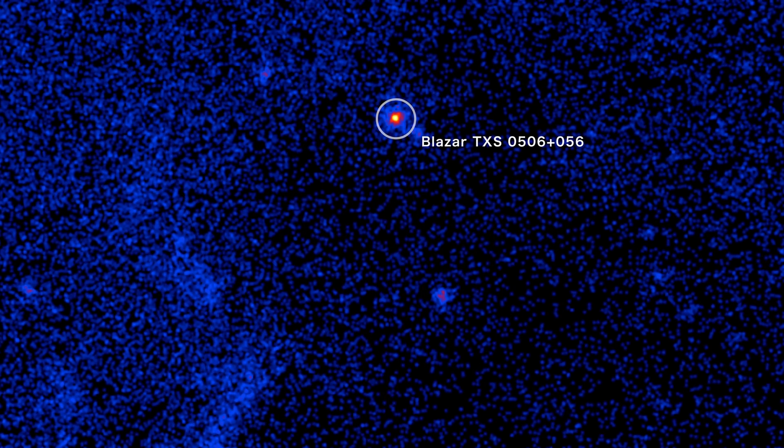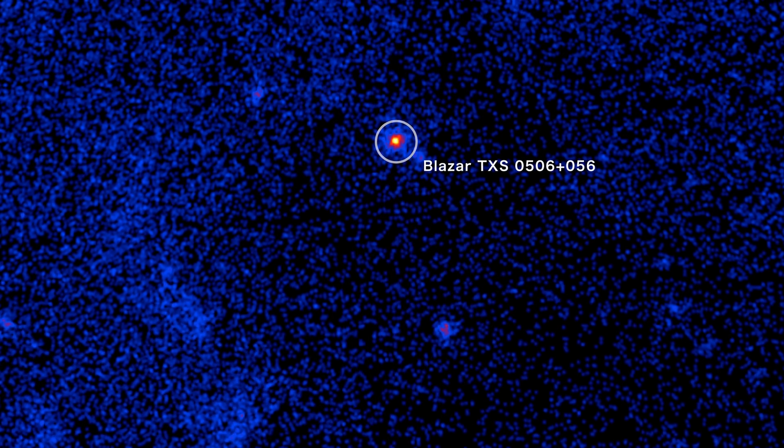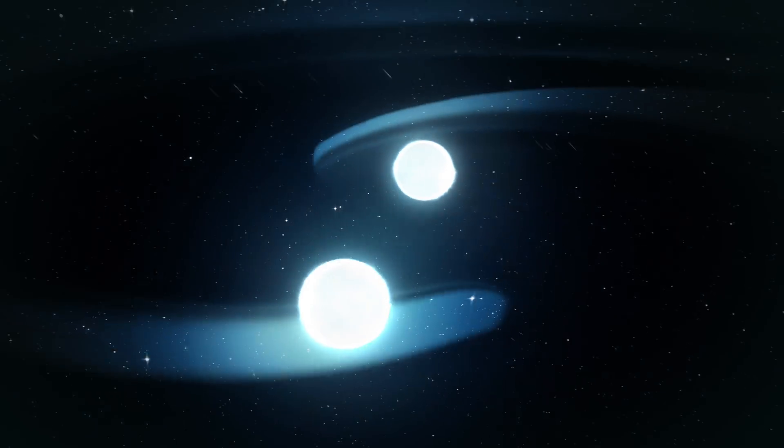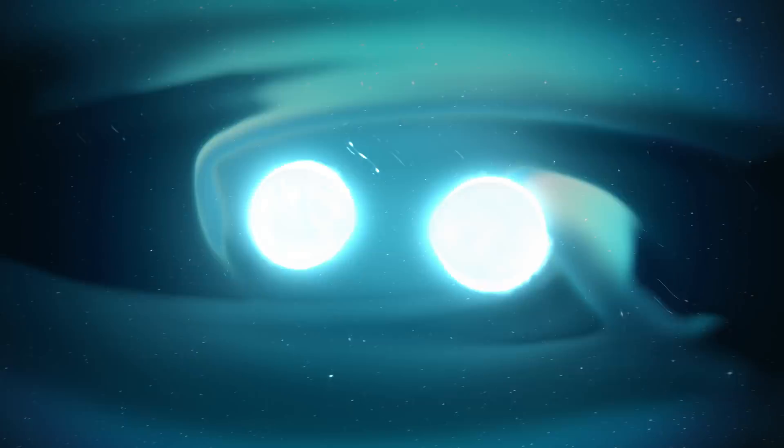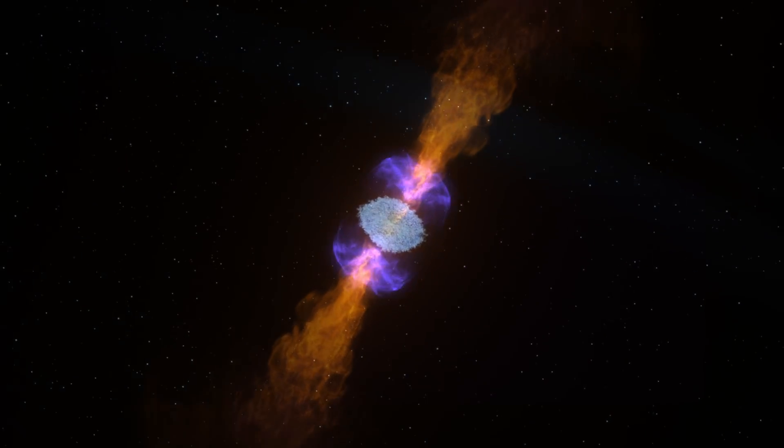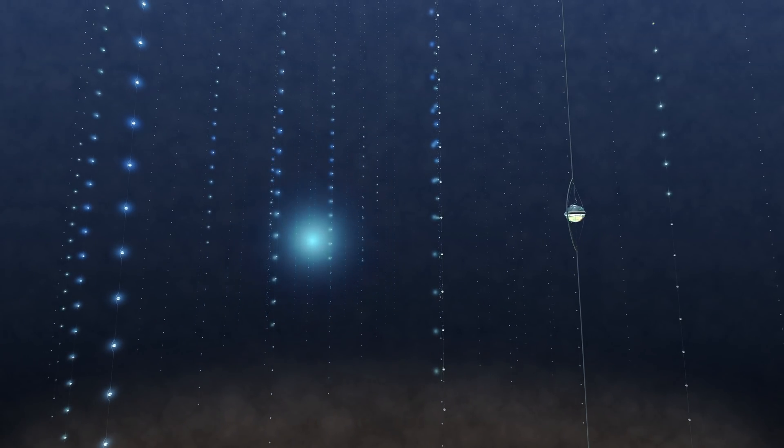It's the first time a neutrino could be traced back to a black hole, or to any source beyond our immediate galactic neighborhood. And it's an important step forward for a growing field scientists call multi-messenger astronomy, which combines light with new signals, like gravitational waves and neutrinos, to provide new insights on the most extreme cosmic phenomena.